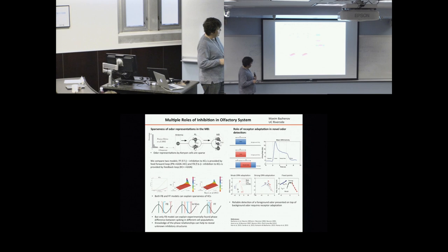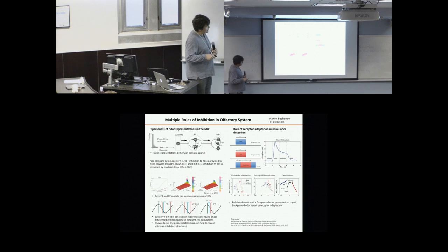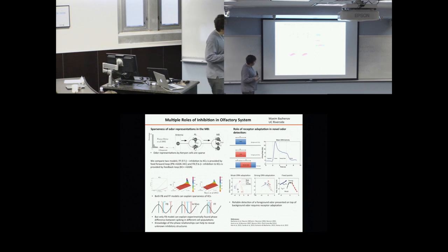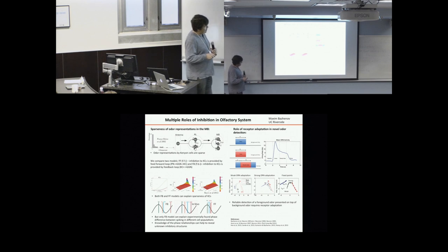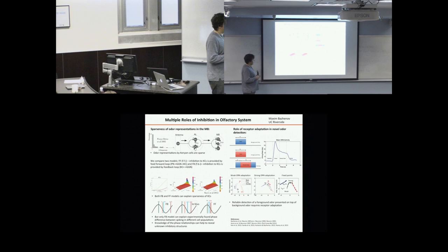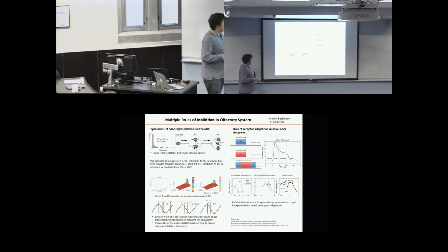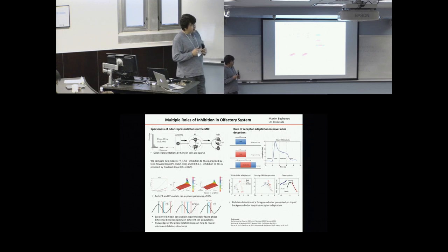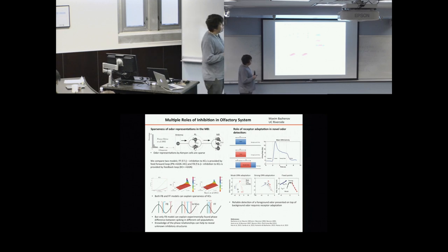This is experimental data. Within a cycle of the local field potential, PNs usually fire first, then KCs, LHNs, and GGN. The feedback model can reproduce this very well, but the feedforward model shows different timing. This suggests that if you know the phase relationship between spiking in different populations, you can potentially predict what kind of inhibitory circuit exists within the system.